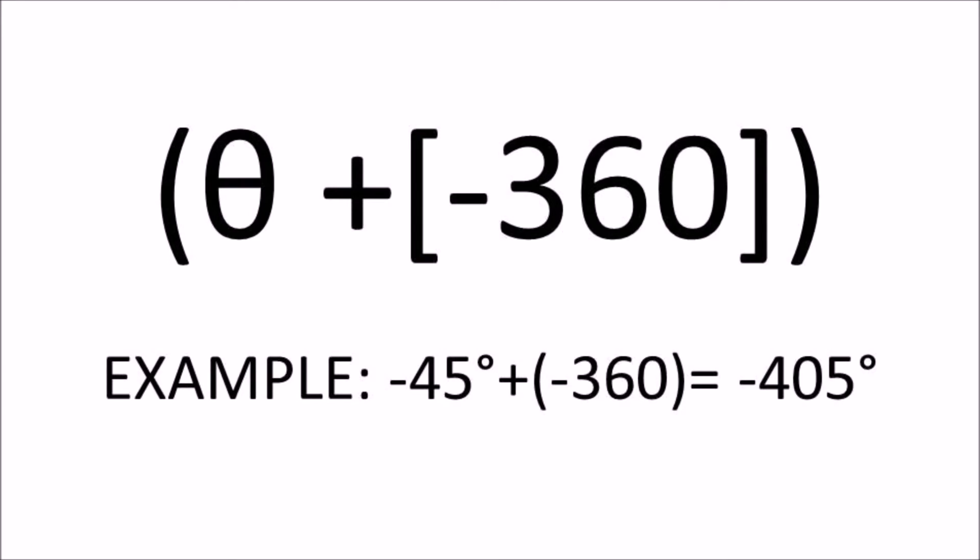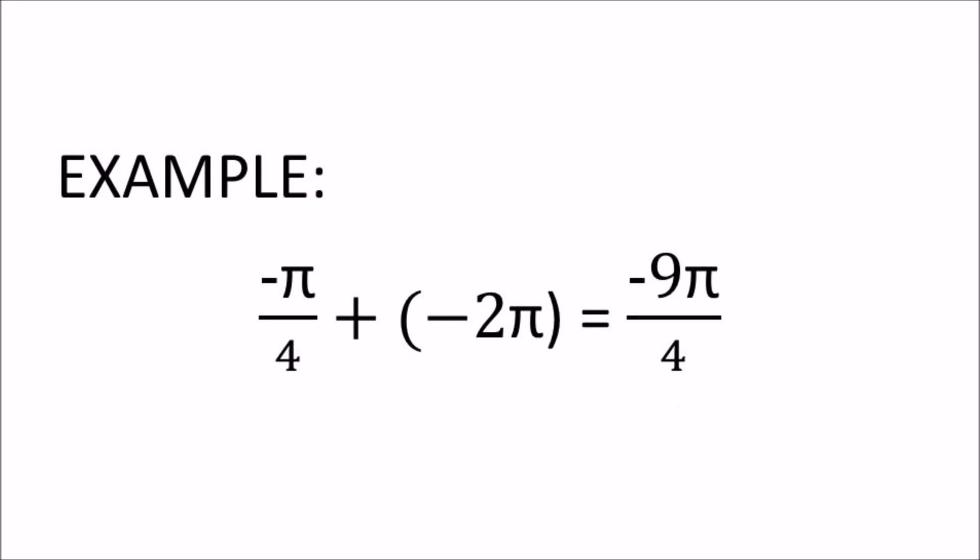If the measure of the given angle is in radians, add it to negative 2 pi. For example, negative pi over 4 plus negative 2 pi equals negative 9 pi over 4.